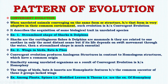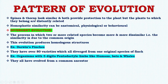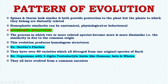Similarity among unrelated organisms as a result of convergent evolution is known as homoplasy. The wings of birds, bats, and insects are homoplastic features because the common ancestor of these three groups lacked wings. Among plants, spines (modified leaves) and thorns are examples of homoplasy. Spines and thorns look similar and both provide protection to the plant, but the plants to which they belong are distantly related. Homoplastic similarity can be anatomical, physiological, or behavioral.